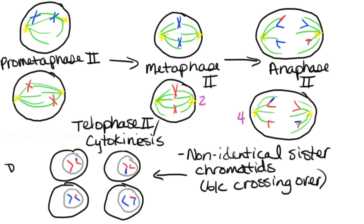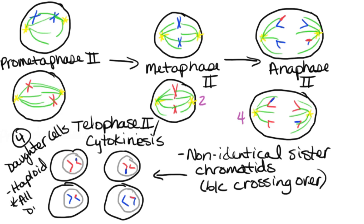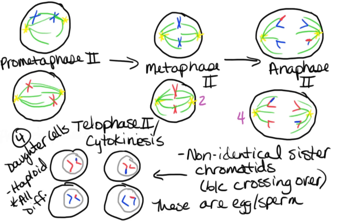So these are going to be our daughter cells. Notice that we have four total daughter cells, and they are all going to be haploid. Very importantly, they are all genetically different from each other — we have completely new recombinant chromatids in there, and each cell has a different genetic combination inside it. Those daughter cells would be gametes — either egg or sperm depending on the parent cell. If this process is occurring in a female, these are egg cells; if occurring in a male, these are sperm cells.